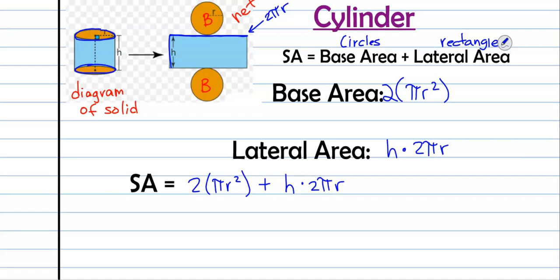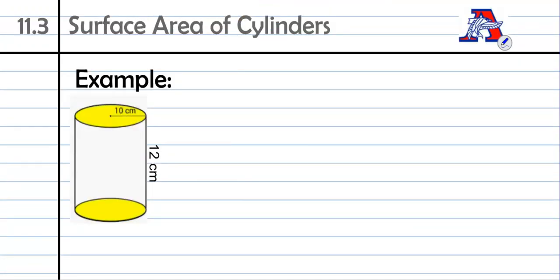So we're just going to go into one example here. Take a second to sketch that. And we're going to write down that surface area formula once again. So surface area equals 2 times pi r squared. That's going to take care of our circles, plus height times 2 pi r. That's going to take care of our rectangle.